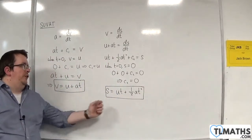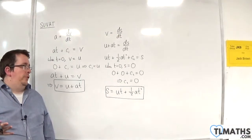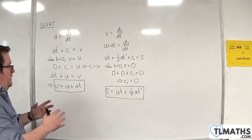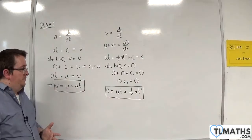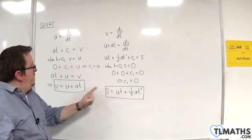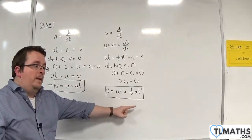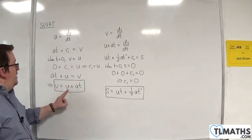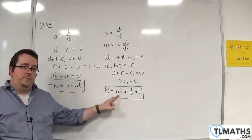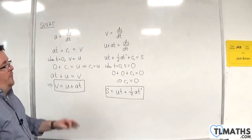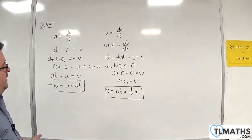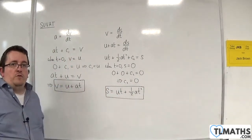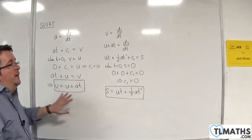Now, by rights, just using those two equations we can manipulate them to find the other forms. If you wanted to work out s = ½(u + v)t, you'd rearrange the first one to get a equals and substitute it into the second. If you want s = vt − ½at², rearrange for u equals and substitute. And if you want v² = u² + 2as, you need to eliminate t by rearranging for t equals and substituting in. So you can derive the other three just from those two.